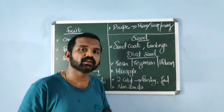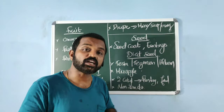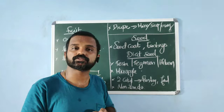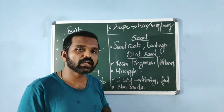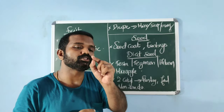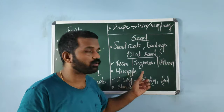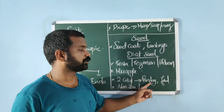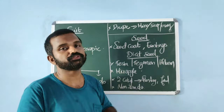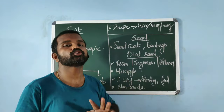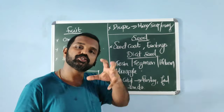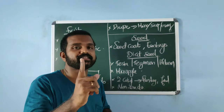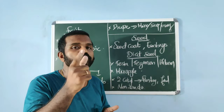In a dicot seed, the seed coat has two layers: the outer testa and the inner tegmen. The hilum is the point of attachment of the developing seed on the fruit. Above the hilum there is a small pore known as the micropyle. The two cotyledons in dicot seeds are often fleshy with stored food. Dicot seeds are usually non-endospermous — meaning endosperm is not present in the mature seed as it is fully consumed during embryonic development. Castor is an exception — it is a dicot with an endospermous seed.